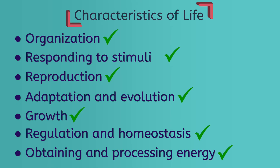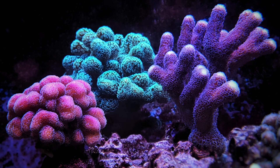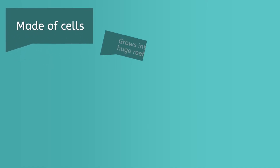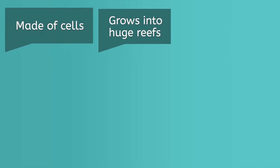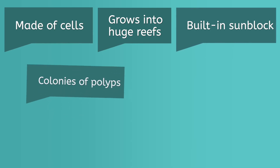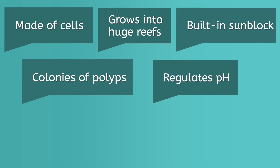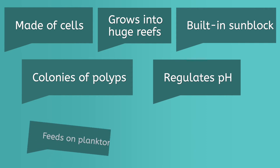So let's practice. Would you consider a piece of coral in the ocean alive? Let's list a few things that we can easily find out about coral through a bit of research. It is made of cells, grows into huge reefs, has built-in sunblock to resist bleaching, and has colonies made of hundreds to thousands of polyps that together can regulate its own pH levels inside to resist ocean acidification.